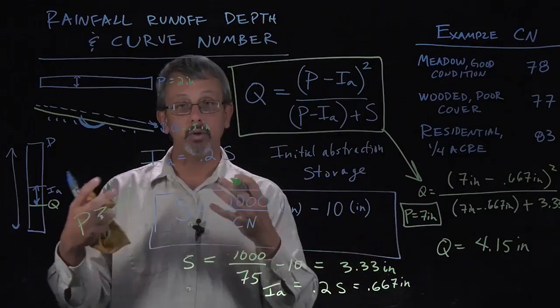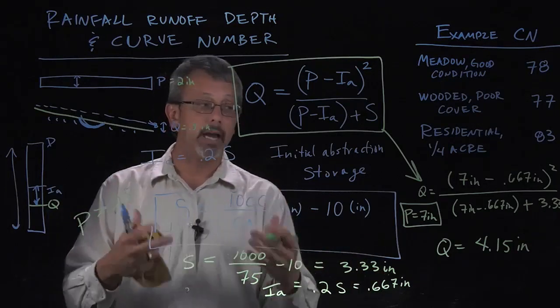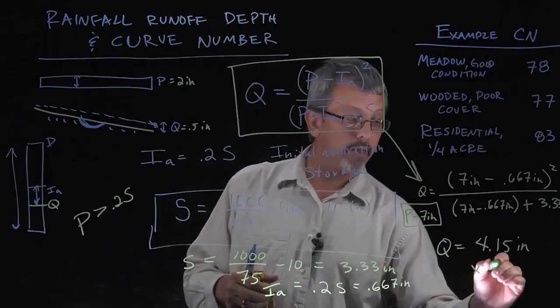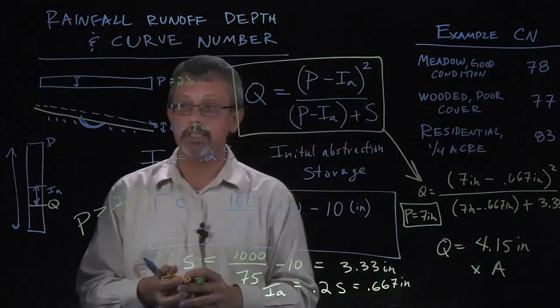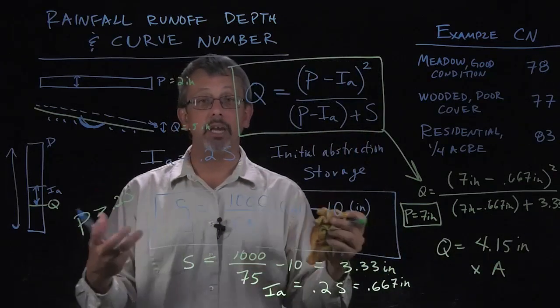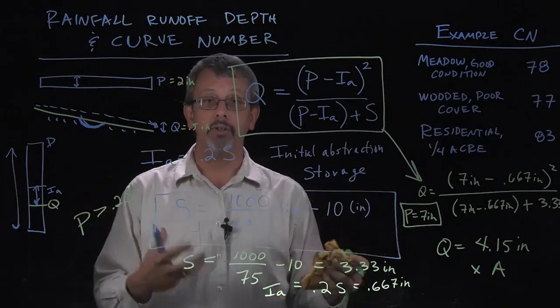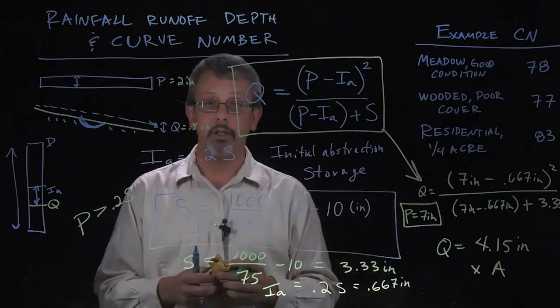If we're interested in seeing if that goes through a stream or maybe storing that value, maybe we multiply that by whatever our acreage is, the area that we're interested in. And that would give us a volume of water that has run off as a result of this seven inch rainfall event.